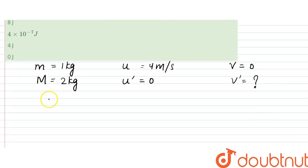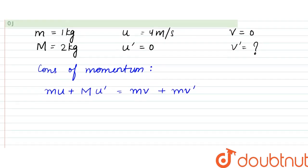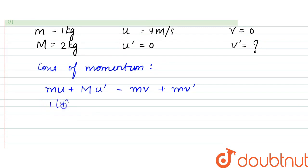Using conservation of momentum, initial momentum mu plus M u dash would be equal to mv plus M v dash. So mu is equal to 1 into 4 plus 2 into 0 would be equal to 1 into 0 plus 2 into v dash. So from here it would be 4 which is equal to 2 v dash. Therefore v dash would be equal to 2 meter per second in the same direction.